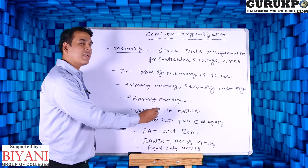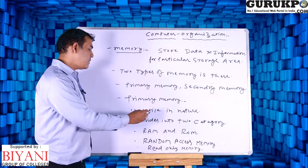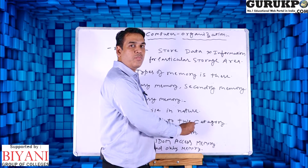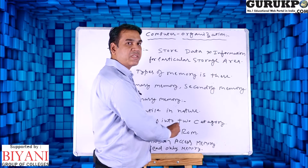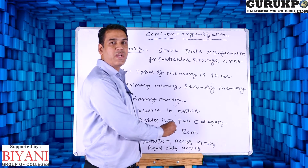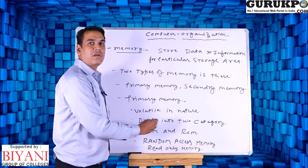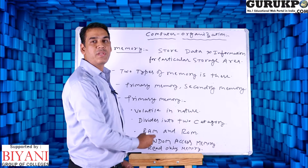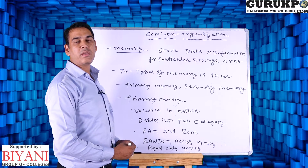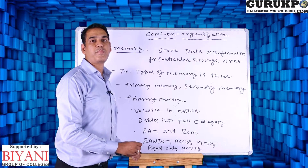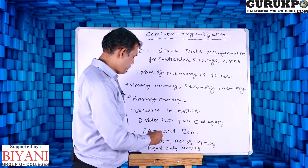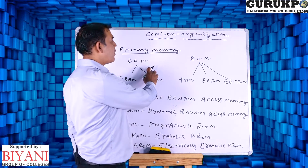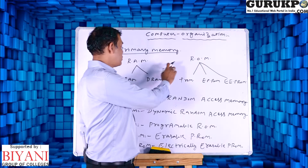Primary memory is basically divided into two categories: first is called RAM and second is called ROM. RAM is basically random access memory. Random access memory is defined in different types like SRAM and DRAM. Read-only memory is defined in three types: PROM, EPROM, and EEPROM.